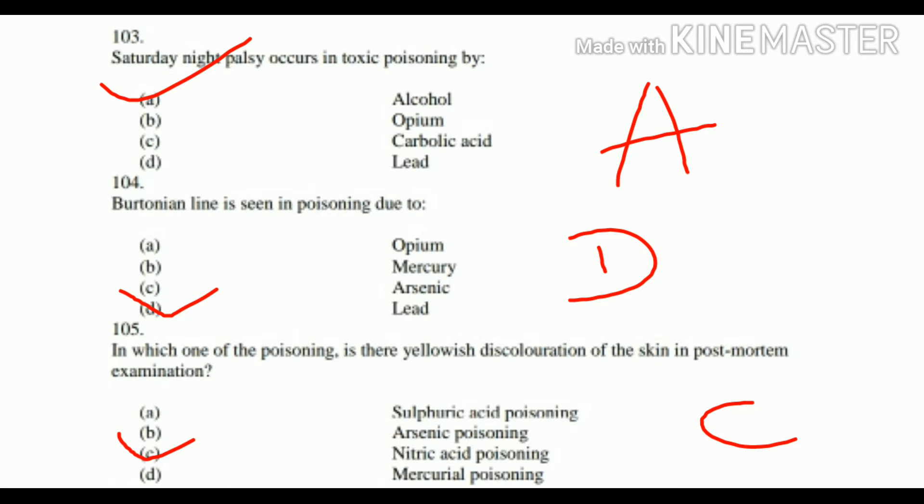Question number 104: Burton's line is seen in poisoning due to: A. Opium, B. Mercury, C. Arsenic, D. Lead. The right answer is D. Lead.